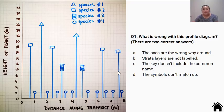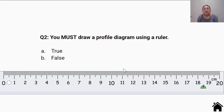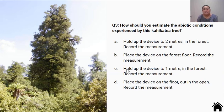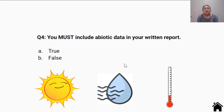Let's check your understanding. Question 1: What is wrong with this profile diagram? There are two correct answers. A: The axes are the wrong way around. B: Strata layers are not labelled. C: The key doesn't include the common name. D: The symbols don't match up. Question 2: You must draw a profile diagram using a ruler. True or false? Question 3: How should you estimate the abiotic conditions experienced by a kahikatia tree? A: Hold the device to 2 meters in the forest. B: Place the device on the forest floor. C: Hold the device to 1 meter in the forest. D: Place the device on the forest floor out in the open.